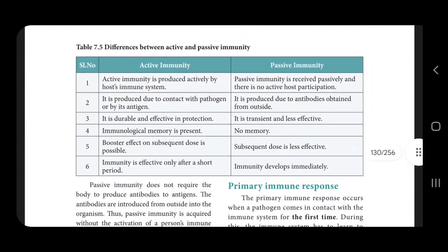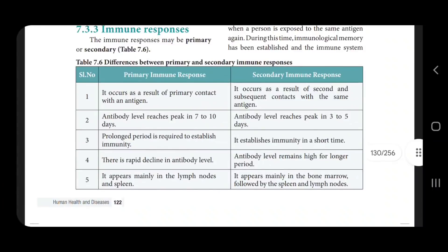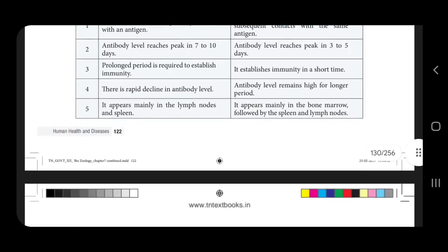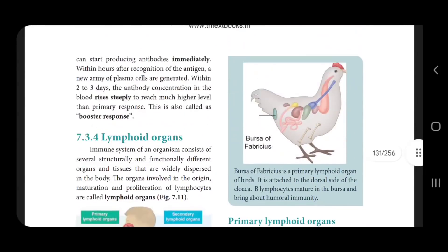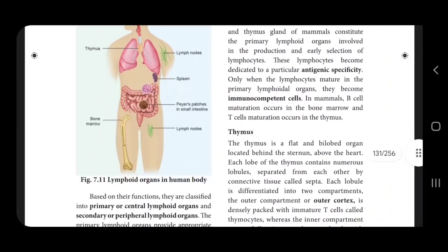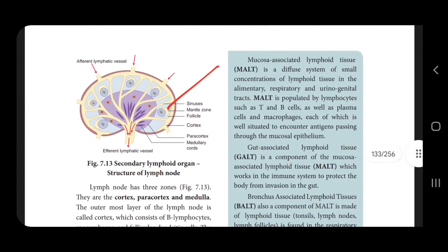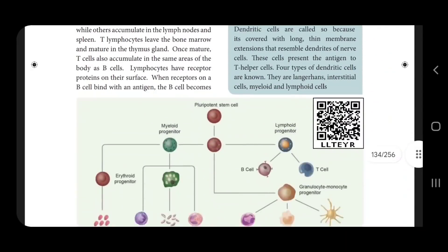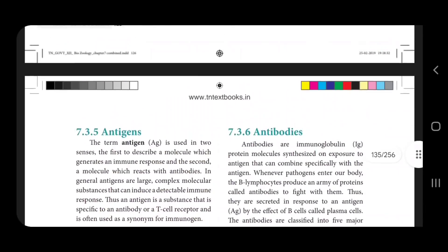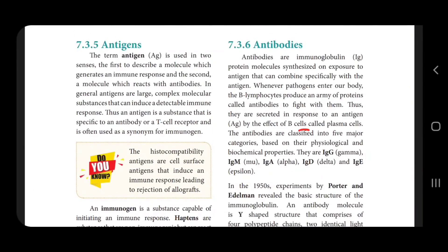Active and passive immunity — primary immune response and secondary immune response differences. You can see the difference in the immunities. Lymph is important — know the diagram. Let's look at antibodies.